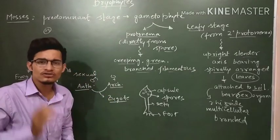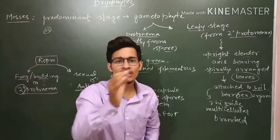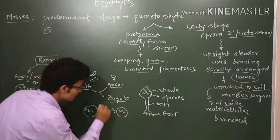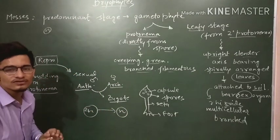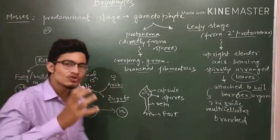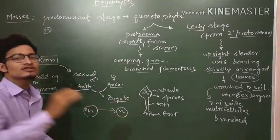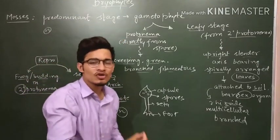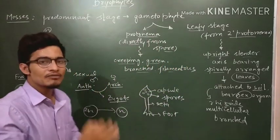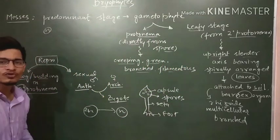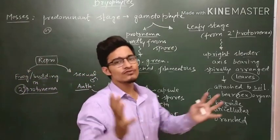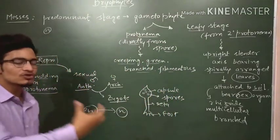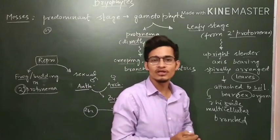The zygote is diploid, and to convert the diploid into haploid we need to go through meiosis - the reductional division. After meiosis the spores will be generated. Since the final progeny must be haploid because the body is gametophyte, we have to generate progeny which is also gametophyte. The spores are formed after meiosis, present in the capsule, and that capsule will disperse the spores. The spores will go to a particular place and germinate to form the new plant.